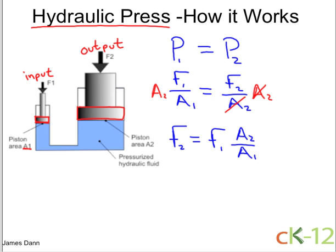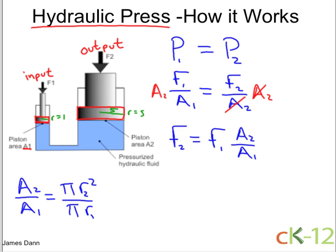You can see in the picture that the surface area of piston 2 is larger than the input surface area. Therefore, F2, the output force, will be much larger than the input force. If we look at the picture, this piston is about five times larger in radius than the input piston. So we'll say the radius of the input piston is one and the radius of the output piston is five. Now we can compute the ratio of the areas, A2 over A1. The area of a circle is pi R squared, so that's pi R2 squared over pi R1 squared. The pi's cancel, and if we plug in those numbers — the second piston was five times larger — we get five squared over one squared, which is equal to 25.